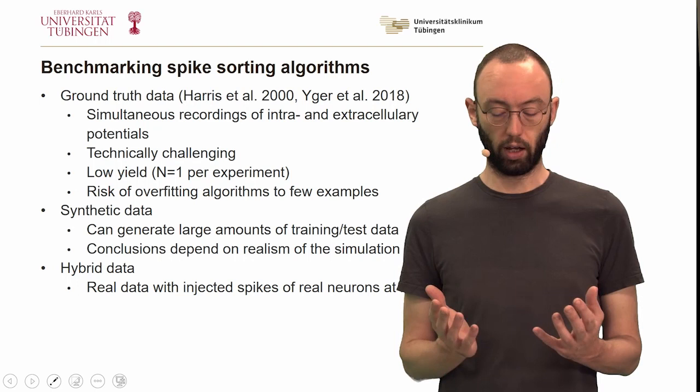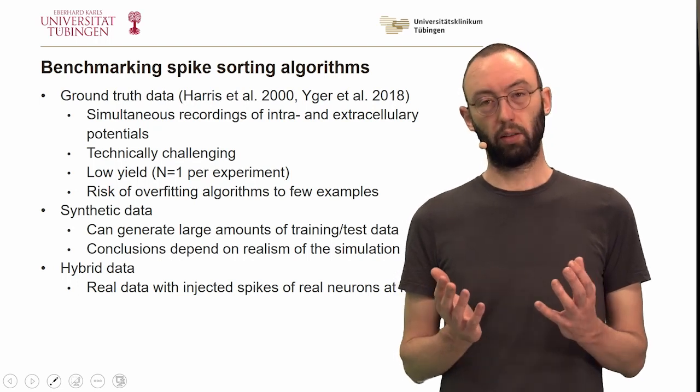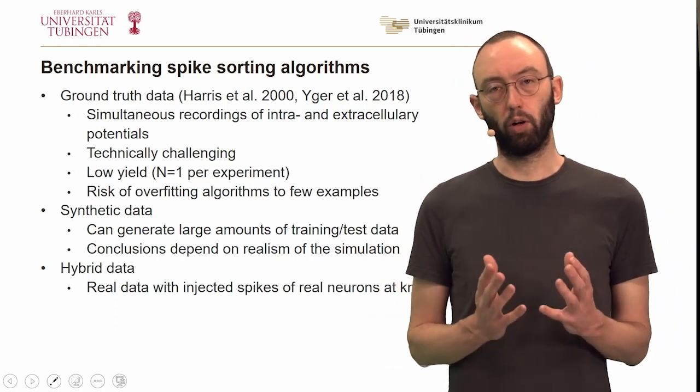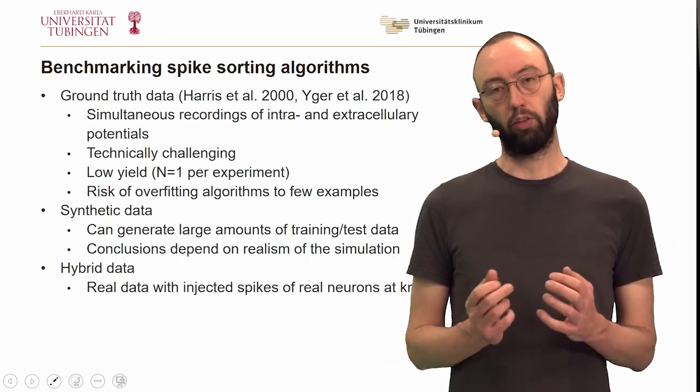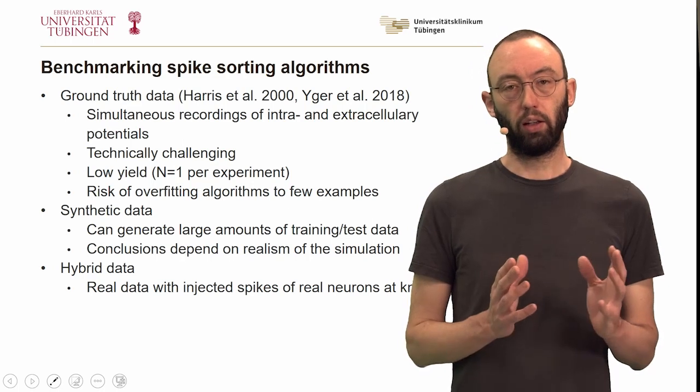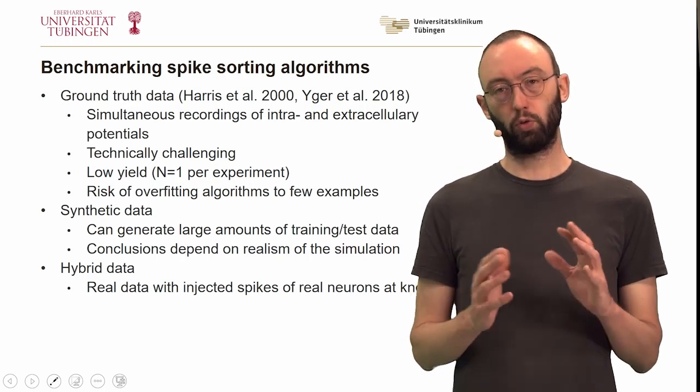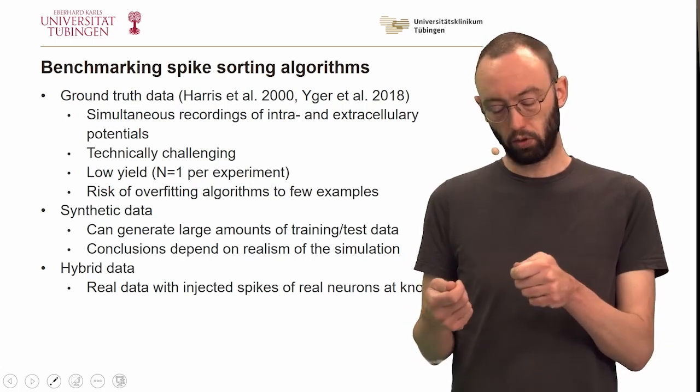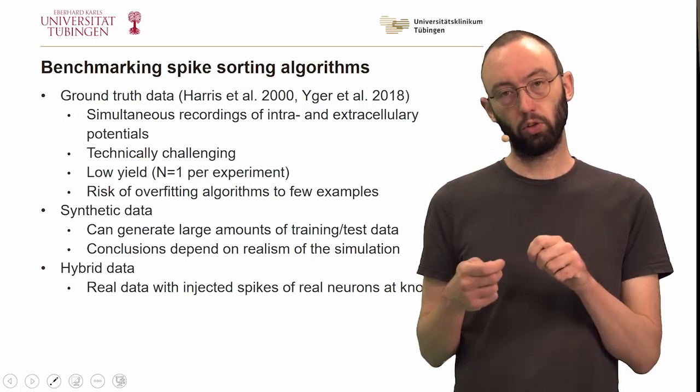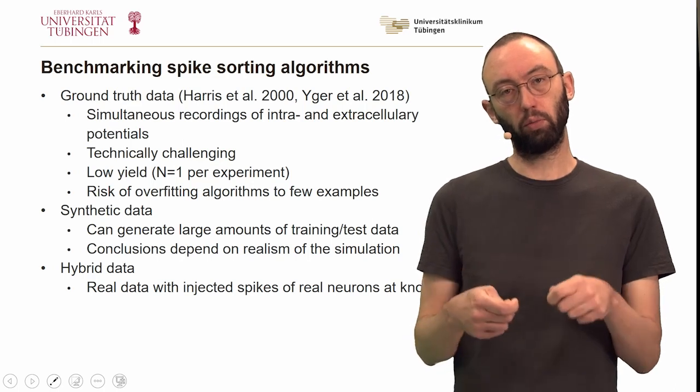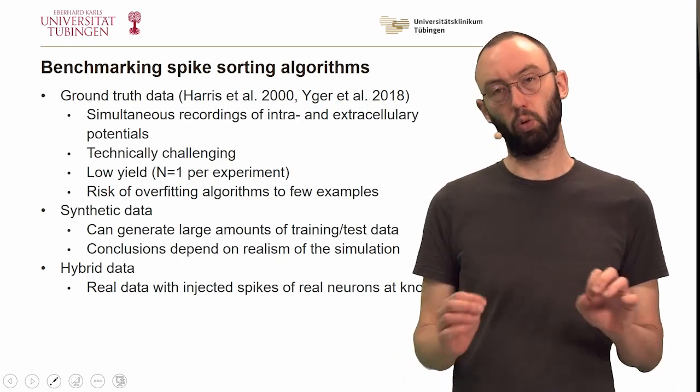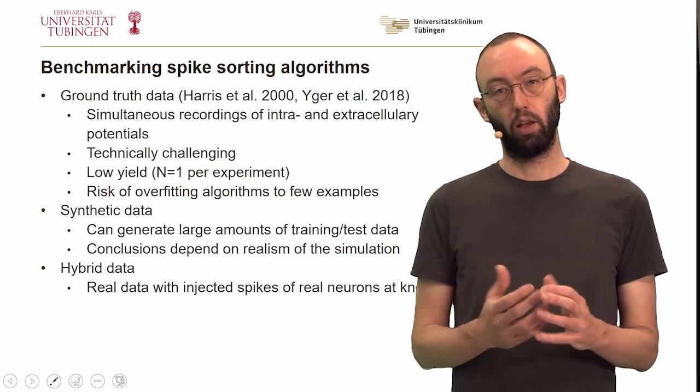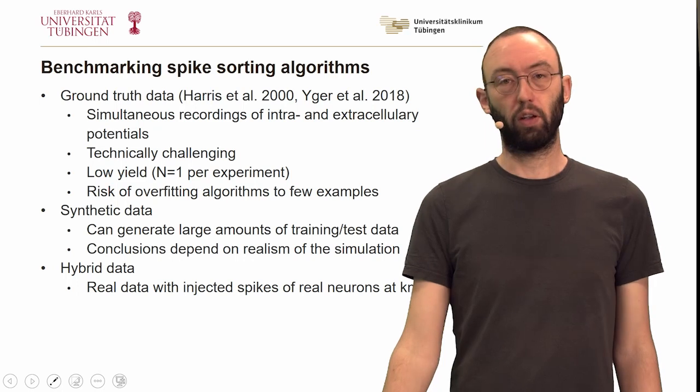An alternative to that would be to create synthetic data where you can easily generate large amounts of training data, but the conclusions you can take away from that to some extent depend on the degree of realism of your data. And finally, you can create hybrid data where you use real data, real recordings, but you manufacture real spikes of real neurons into that. You inject them into your previous recordings at known times, and then you look at how difficult is it to get those back.